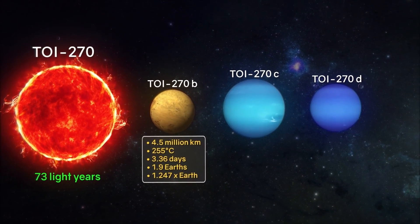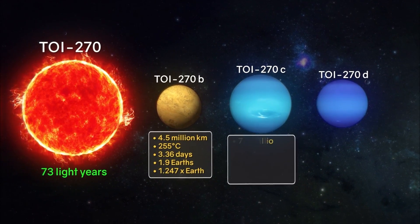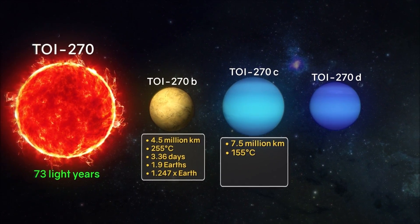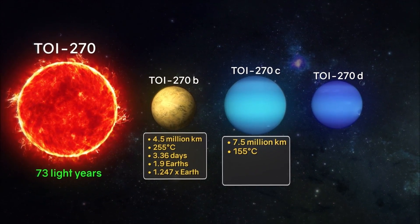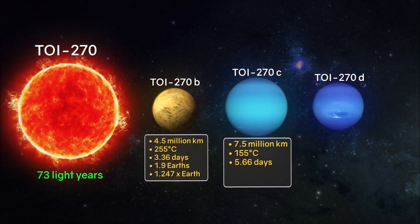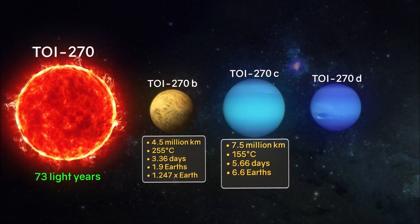Exoplanet TOI-270 c: the distance to the star is about 7.5 million kilometers. The average surface temperature is 155 degrees Celsius. The period of rotation around the star is 5.66 days. The mass is about 5.4 times that of the Earth.